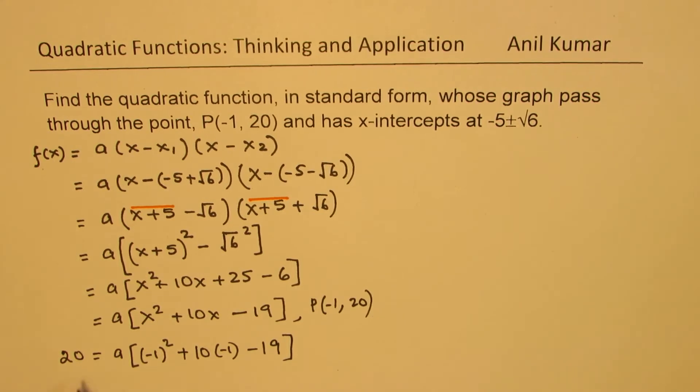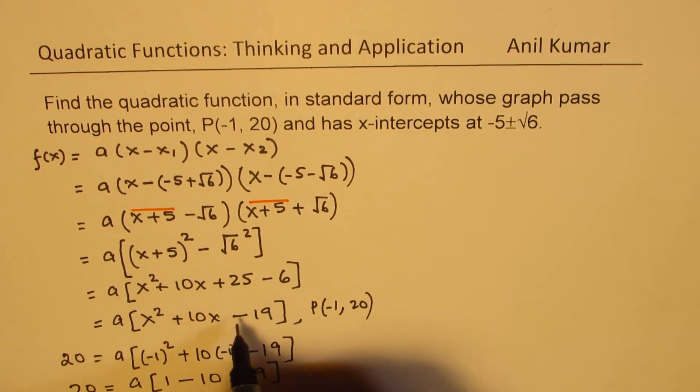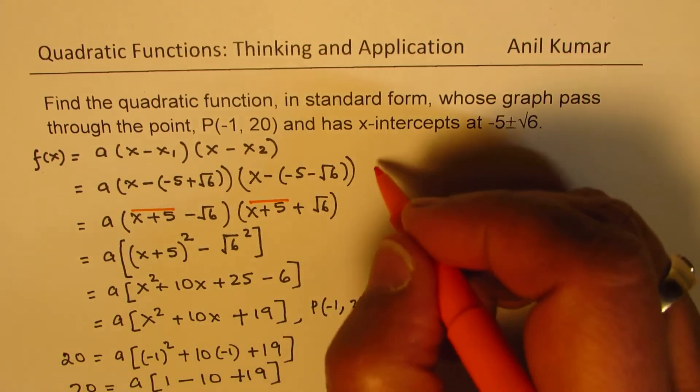So we get 20 equals to a times [(-1)² + 10(-1) + 19], clear? Or we can write this as 20 equals to a times 1, that is -10, and this is +19. So 25 minus 6 is plus 19, so this is not minus, but plus 19, right?